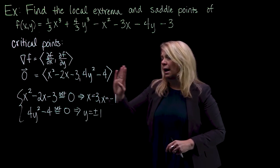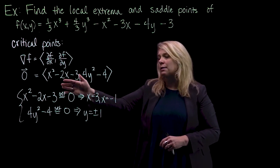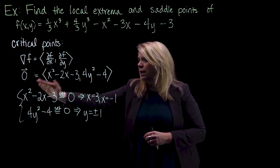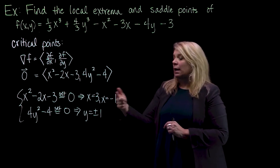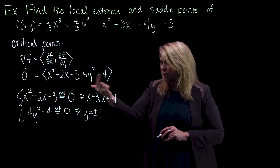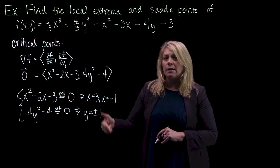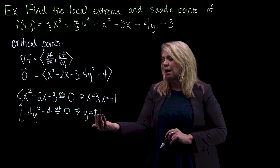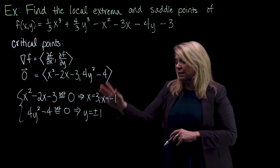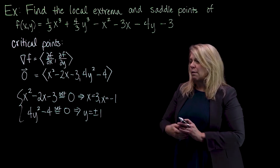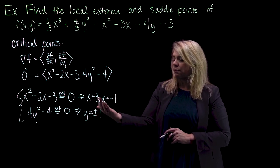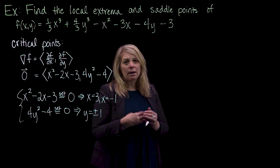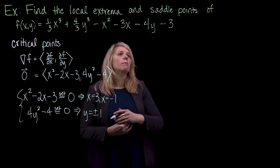Remembering that as a system, both equations must be true simultaneously, so my solutions are ordered pairs. The gradient vector equals zero when x is 3 and y is either value, or when x is negative 1 and y is either value. So I have four critical points for this multivariable function. I'm going to list the critical points in a table and then classify them to determine whether they give maxima, minima, or saddle points.